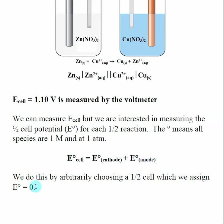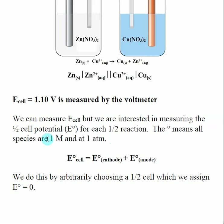To use that equation we need to know the half-cell potentials. The 'naught' symbol (°) means standard conditions: one molar concentration of the aqueous species — so 1 M Zn²⁺ and 1 M Cu²⁺ — and one atmosphere of pressure. The reason we define standard conditions is that later we'll find that half-cell potentials change as concentrations change, so for our basic discussion we stick with one molar solutions.